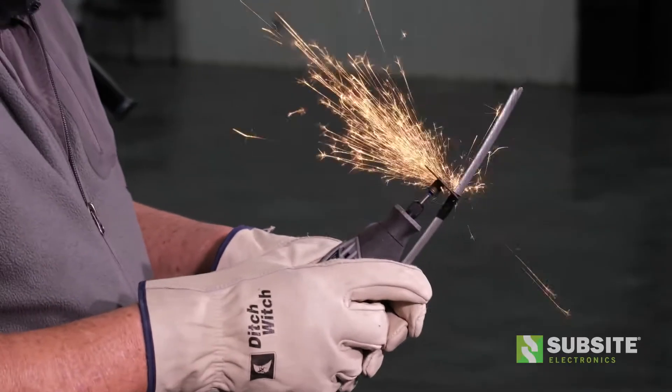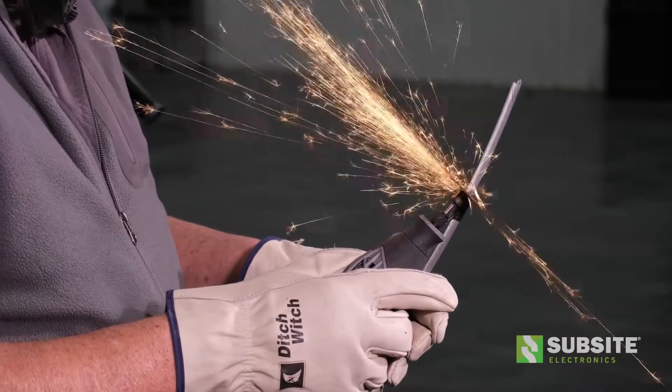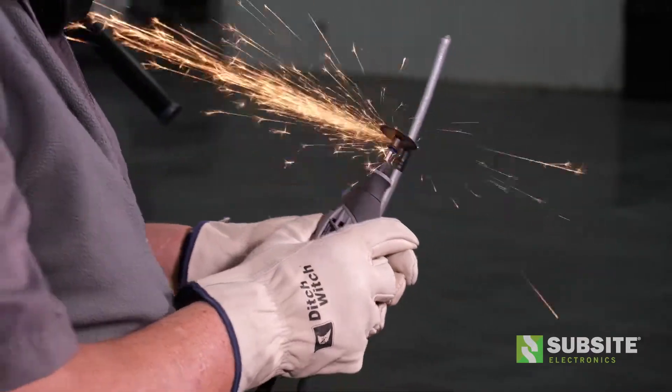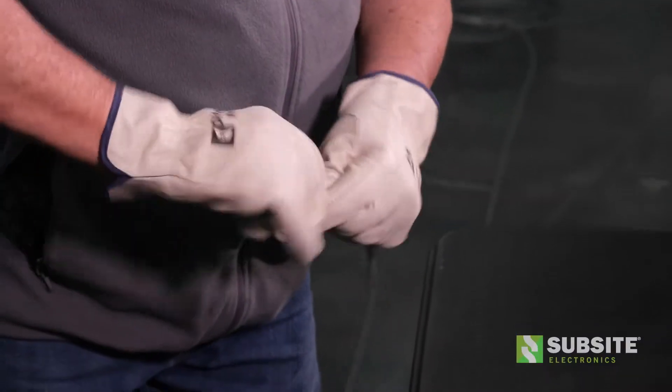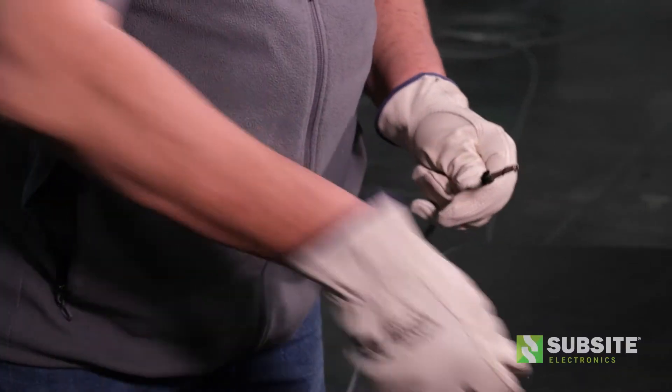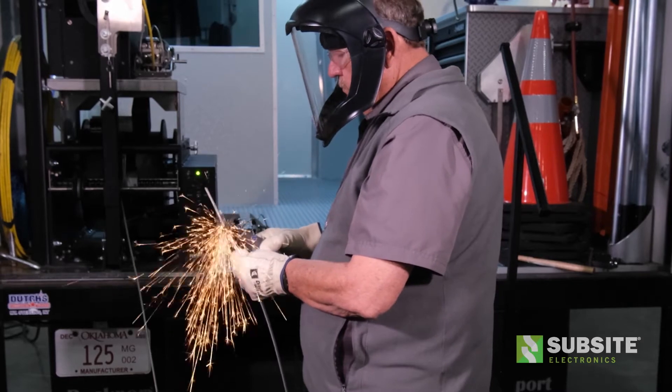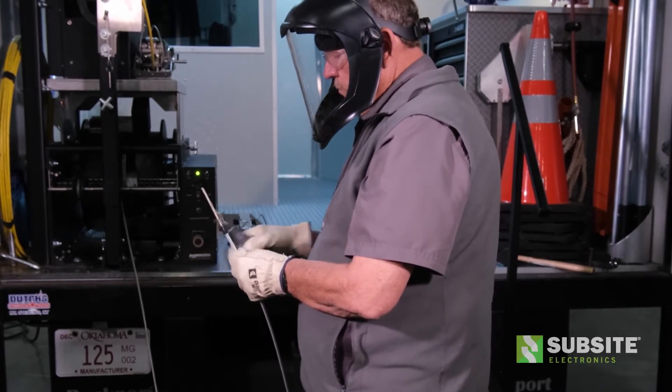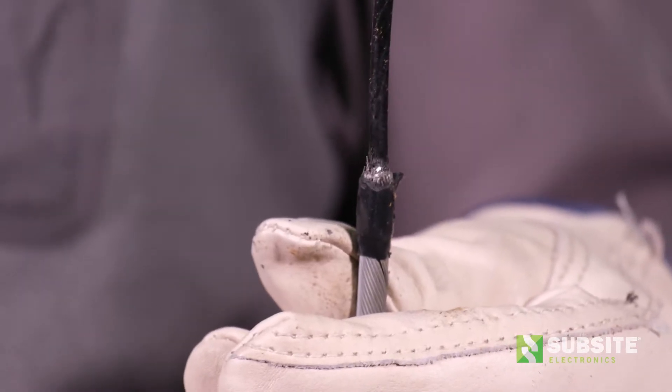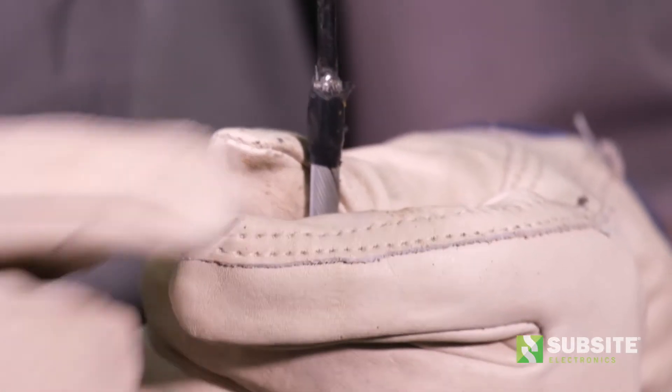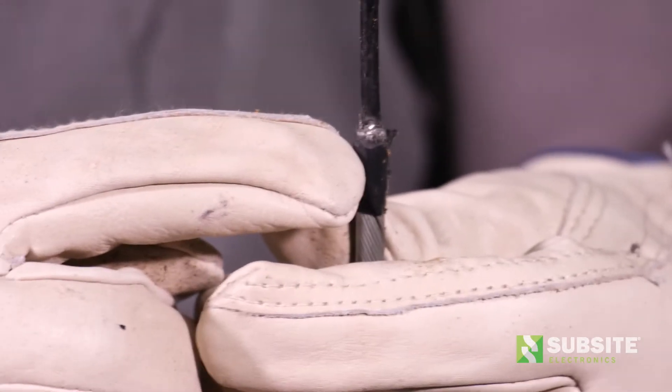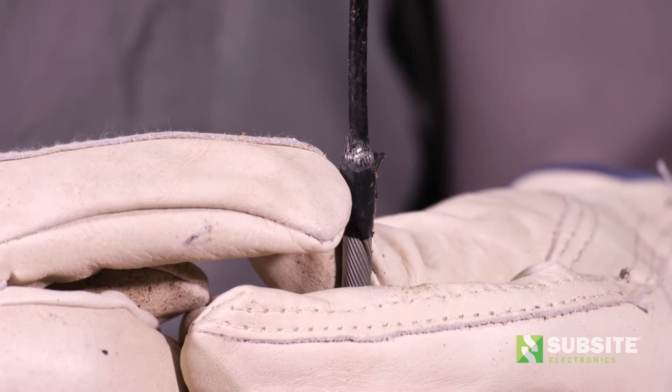To remove the outer braid, score the cable with a Dremel tool while walking around the cable and using the tape as a guide. Once scoring is complete, remove the outer braid as shown. Repeat the same process to score and remove the inner braid. Once the inner braid is removed, check to ensure that you've created a taper. If not, carefully taper the cable without damaging the black jacket.